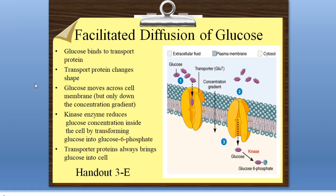There's a little trick to keeping glucose always moving from high concentration to low into our cell, and it involves an enzyme called kinase. Kinase is an enzyme that, when glucose enters our cell, takes the glucose and sticks a phosphate group on it, changing it slightly to a molecule called glucose 6-phosphate. This keeps the concentration of glucose low inside the cell and high outside the cell, because glucose 6-phosphate isn't the same molecule as glucose. That keeps a high concentration of glucose outside the cell, always wanting to move in.